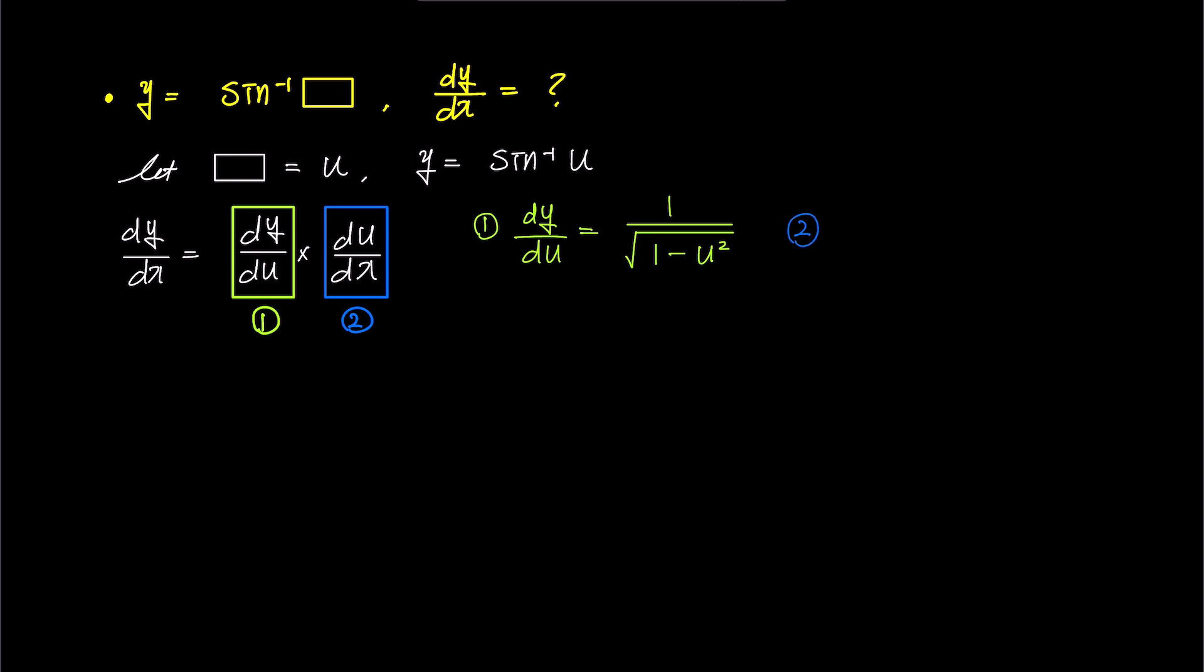For du over dx, which is number 2, it is equal to d box over dx. Now, multiplying the result from 1 and 2, we get dy over dx is 1 over square root 1 minus u squared times d box over dx.